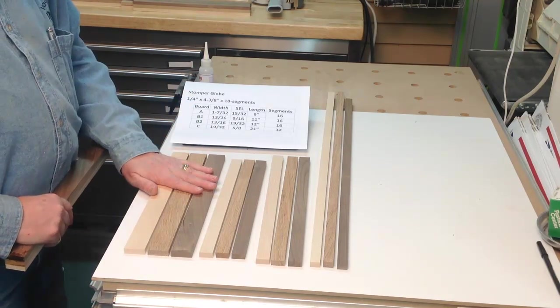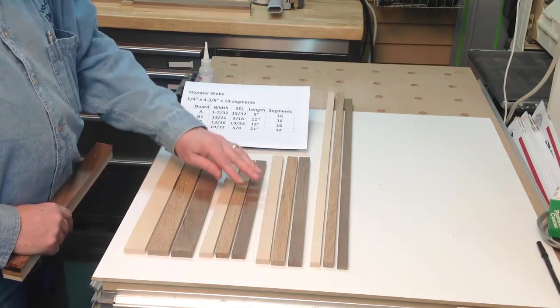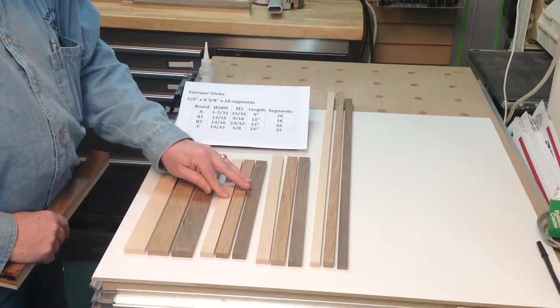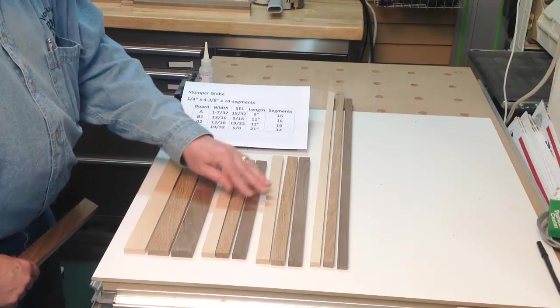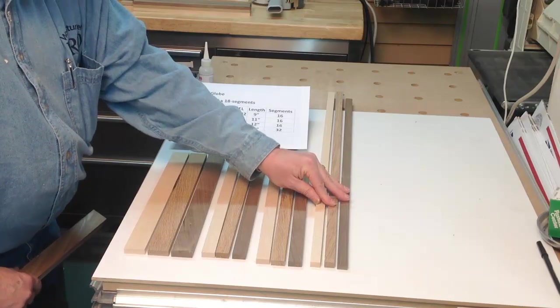So here's board A, there's B. The reason there's a B1 and a B2 is all of these are the same width, but they're going to be cut into different segment edge lengths. So this is going to be our B1 rings, this is going to be for the B2 rings, and this is for the C rings.